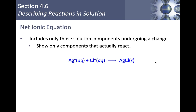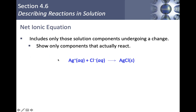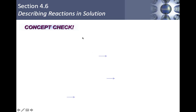The net ionic equation shows only the species actually undergoing change. In the complete ionic equation, nitrate appears on both sides and sodium appears on both sides — those are spectator ions. Cross them out, and you're left with the net ionic: Ag⁺ (aq) + Cl⁻ (aq) → AgCl (s). Spectator ions do not participate directly in the reaction; they are literally just floating around while the reaction happens.